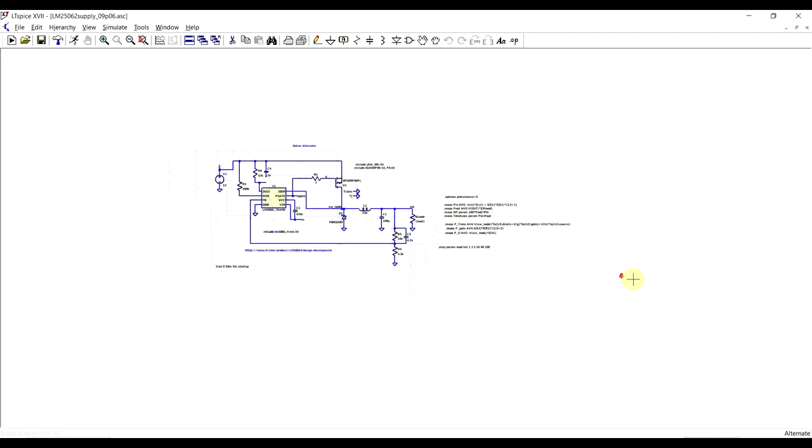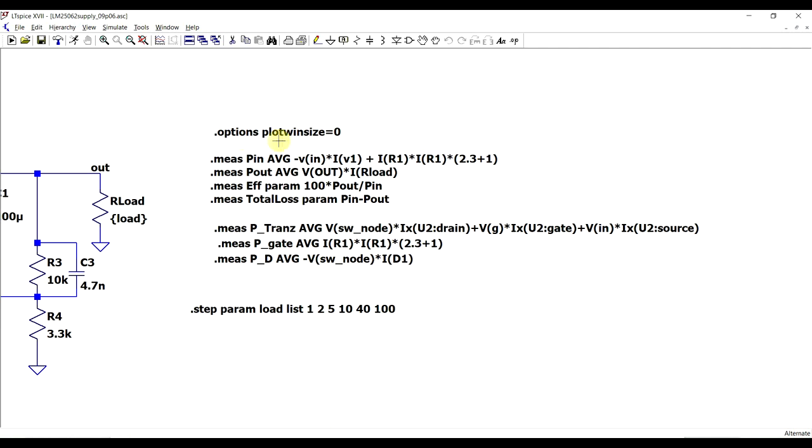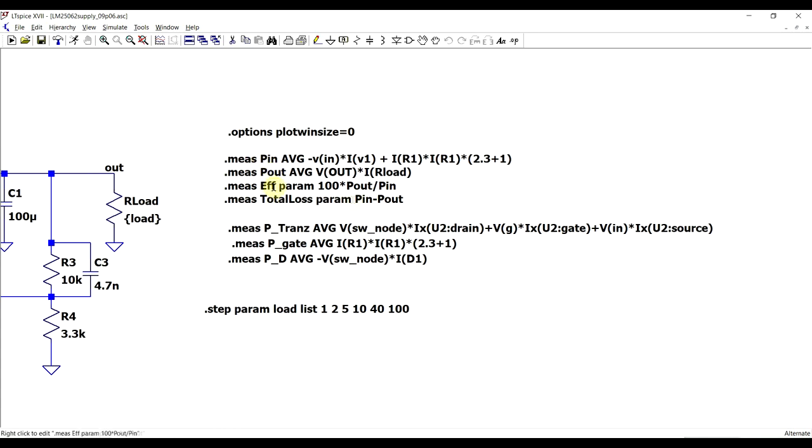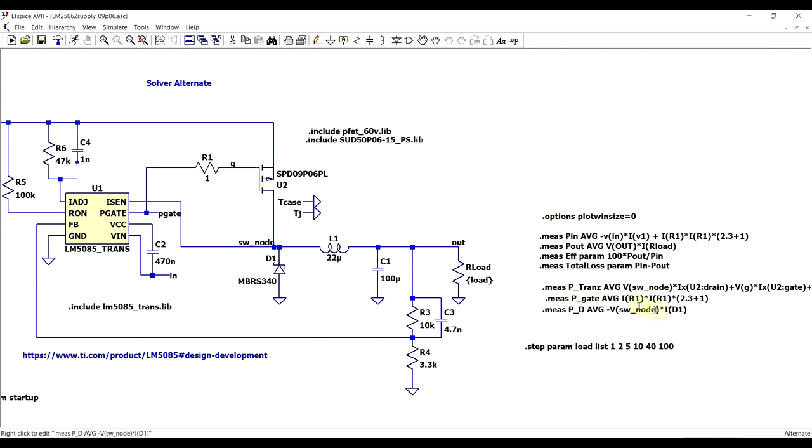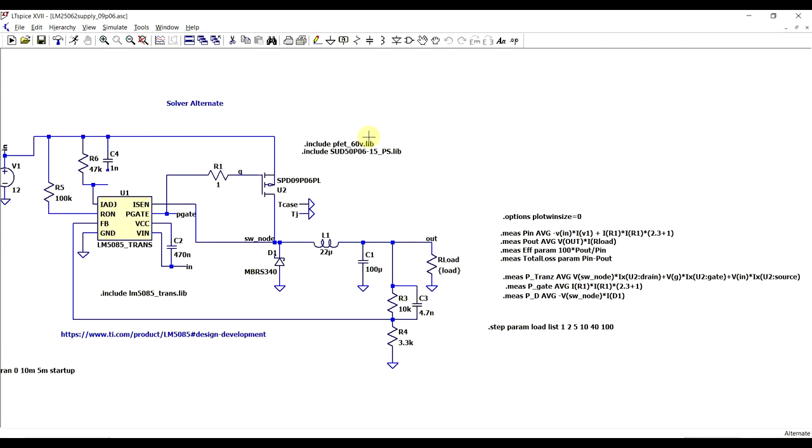Now to evaluate the performance of the two transistors, I prepared a set of measurement statements. So first of all, I disabled data compression to have as many points as possible for an accurate result, and I set measurement statements to measure the input power, the output power, the efficiency, which is the ratio of these, the total loss, so the difference between the two, and then to have some more specific values, I prepared some measurement statements for the various components, so on the transistor, the gate, and the diode. Now specifically to measure the gate power, I'm calculating this by measuring the current that runs through this R1 and multiplying it by the gate resistance, which is 2.3 ohms from the datasheet, plus this extra 1 ohm, which is placed outside. So this resistor again is not really necessary in the real implementation, it's just here for circuit stability. Finally, to evaluate performance over multiple load points, the load resistance isn't a fixed value, but rather a list of parameters. So I go from 100 ohms down to 1 ohm, and then all of these measurement statements are evaluated at each of these points.